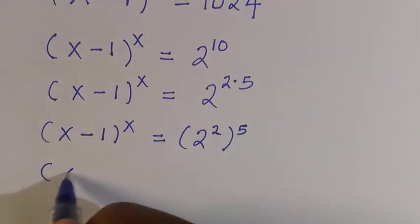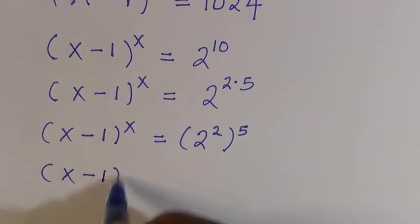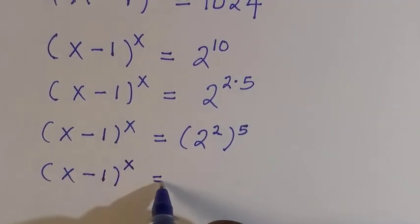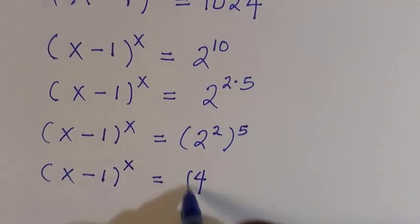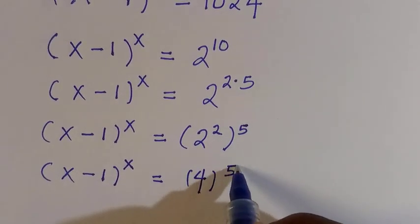Again we have this as (x-1)^x equals, so 2 to the power of 2 is 4, then everything raised to power of 5.